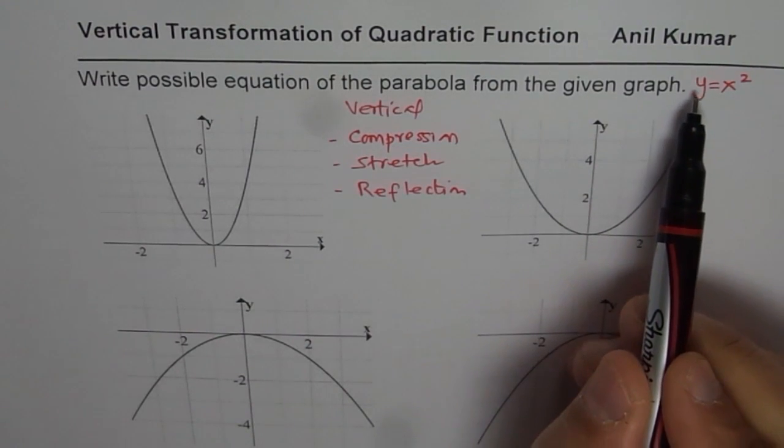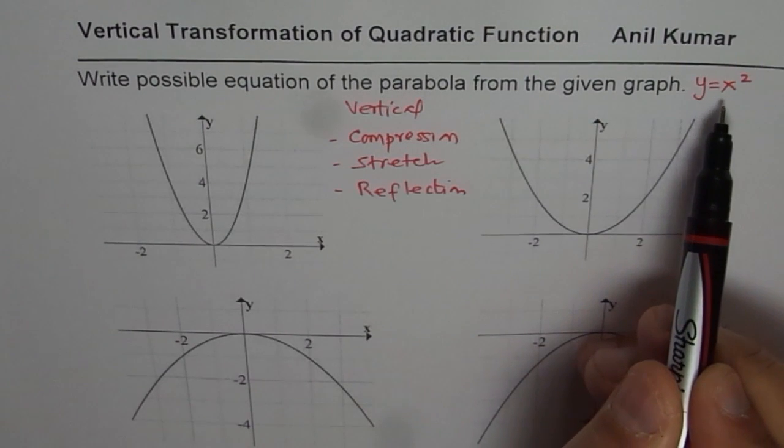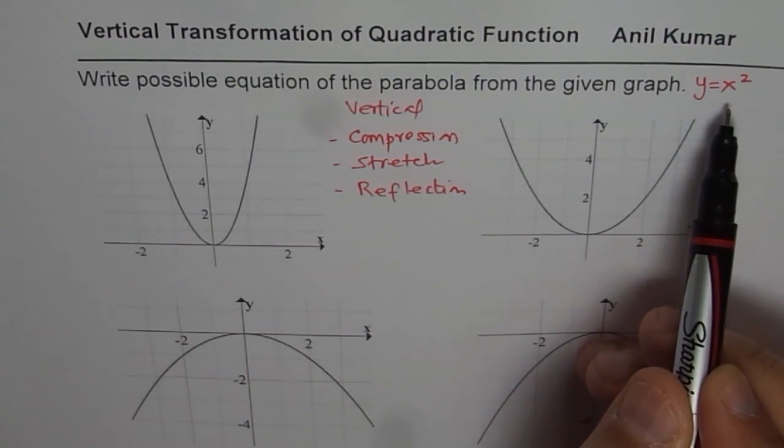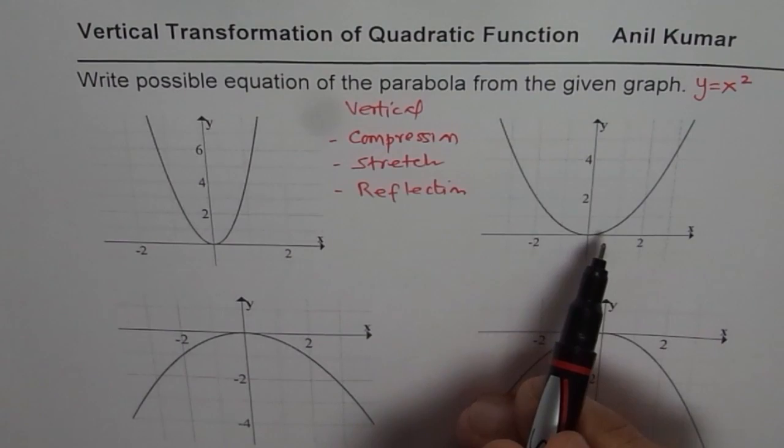Imagine that we have y equals to x squared and it has been vertically stretched or compressed or reflected. In that case, you might get a graph which is matching with one of these. You need to find equation of each graph.